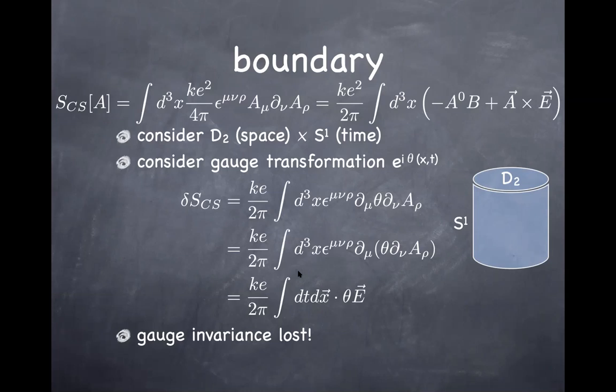The boundary term is integrated over the boundary in space and over time. This dx is a line integral along the boundary — picking up the boundary term after integration by parts — and it projects the electric field along this loop integral. This is how much the action changes under gauge transformation. Now with this boundary, it looks like gauge invariance is lost, because the action changes even when k is quantized to be an integer. This appears to be a problem.